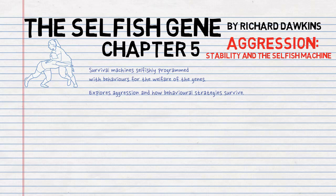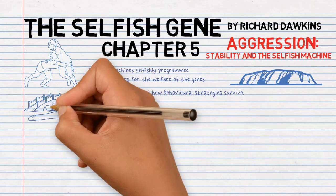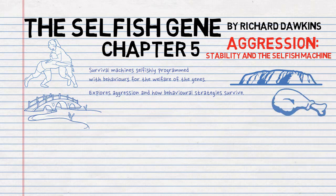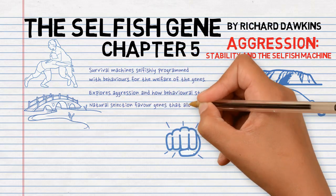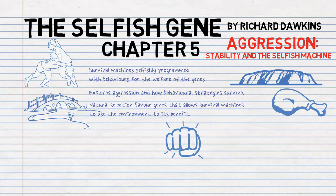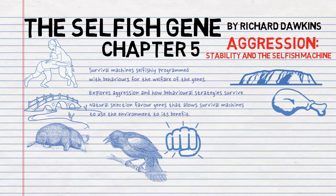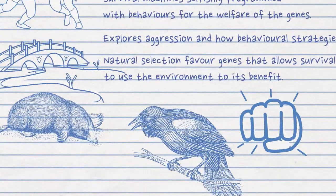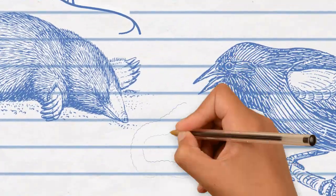Survival machines treat other survival machines as part of their environment — an obstacle or something that can be exploited, like a rock, river, or food, except it can retaliate and hit back. This is because the other survival machine is also trying to preserve its genes for the future. Natural selection thereby favors genes that allow the survival machine to utilize the environment to its benefit. Although some survival machines may not seem to impinge on each other's lives — for example moles and blackbirds — we must not treat them as totally insulated because they could both consume a shared resource such as earthworms.